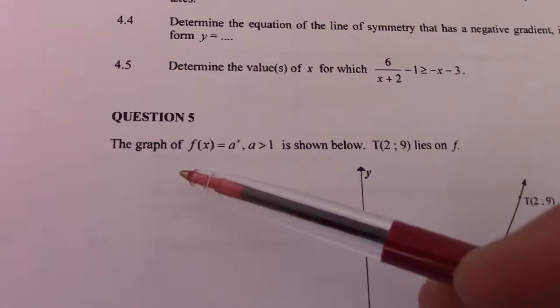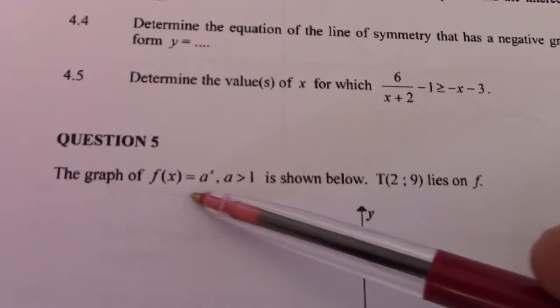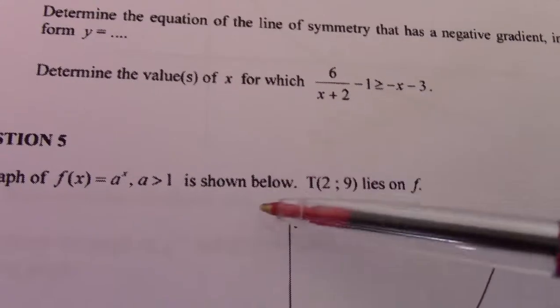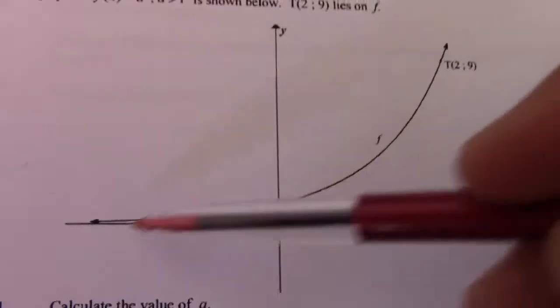Good day and welcome to question 5. We are still under the problematic problems. The graph of f of x equals a to the power x, a greater than 1, is shown below. T(2;9) lies on f. So that's what's given to us.